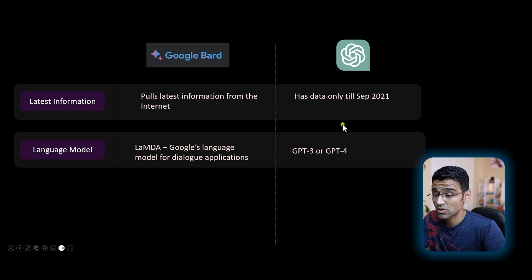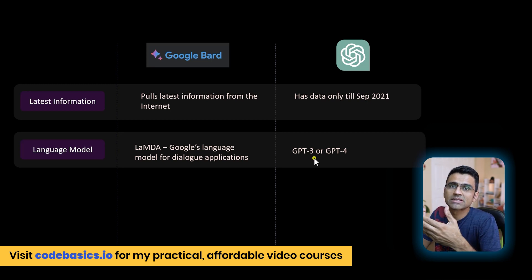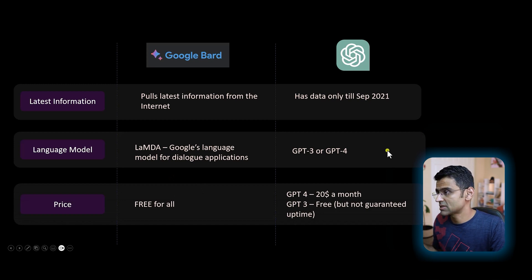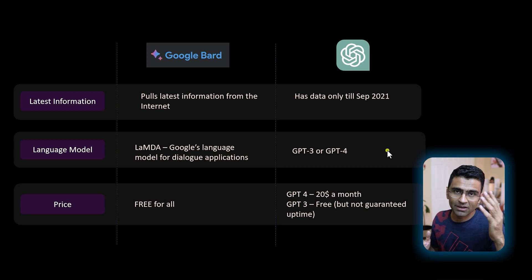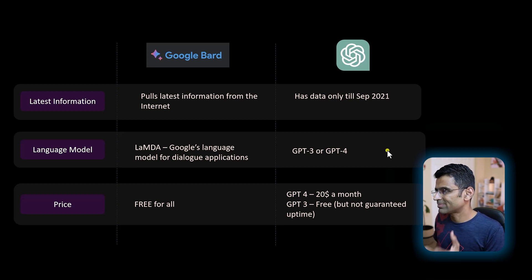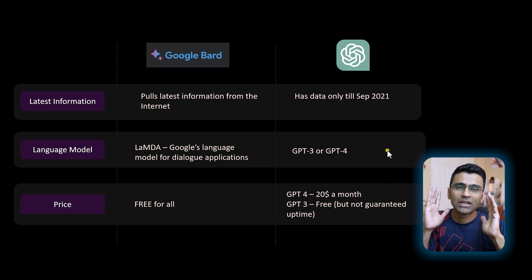Based on which ChatGPT version you are using, the underlying model could be GPT-3 or GPT-4. ChatGPT is the front-facing application, whereas GPT-3 or GPT-4 are the AI models which power it. That model in the case of Bard is LaMDA. The third difference: as of now, Google Bard is free for all, whereas ChatGPT's GPT-4 is $20 a month, and GPT-3.5 is free but sometimes it might be down. Overall, pricing-wise, Google Bard is better. Obviously Google is not doing any charity — in the future they will probably come up with a paid version.